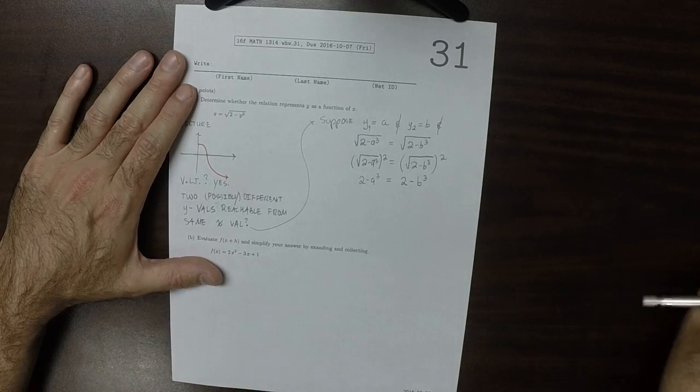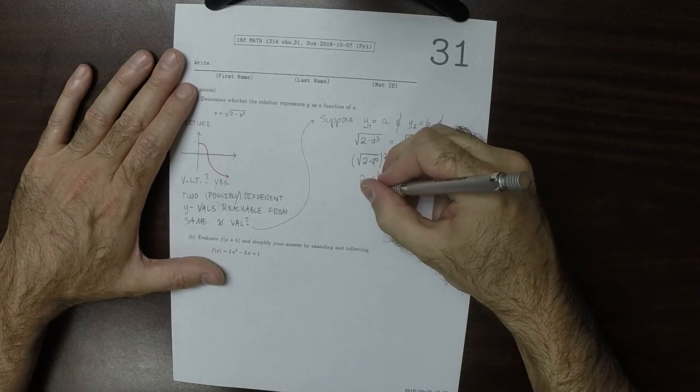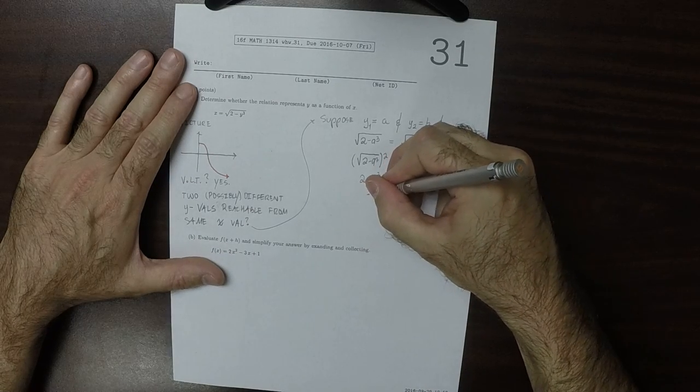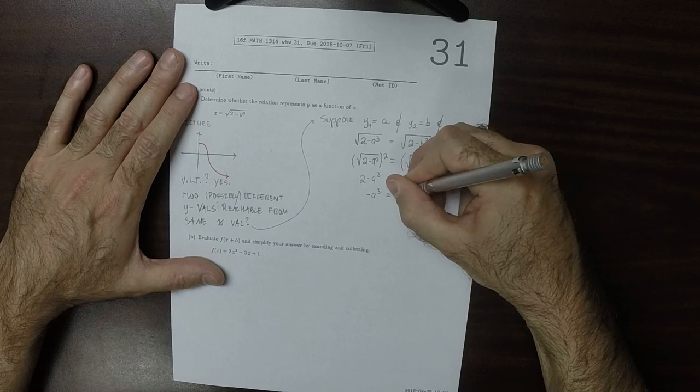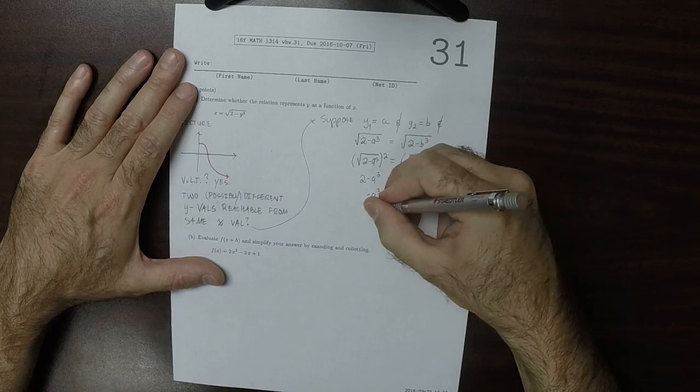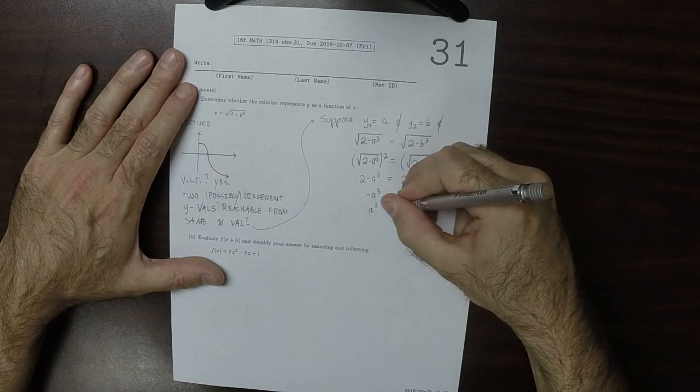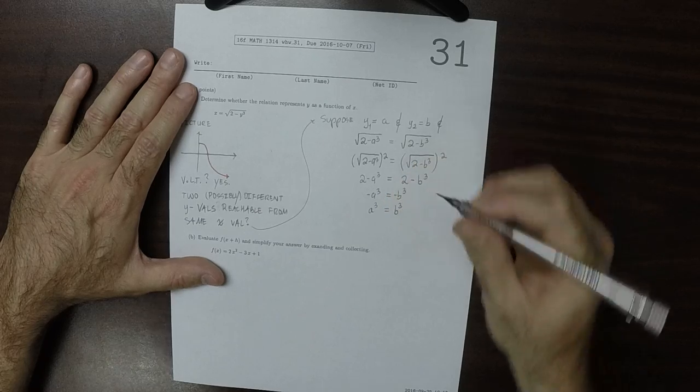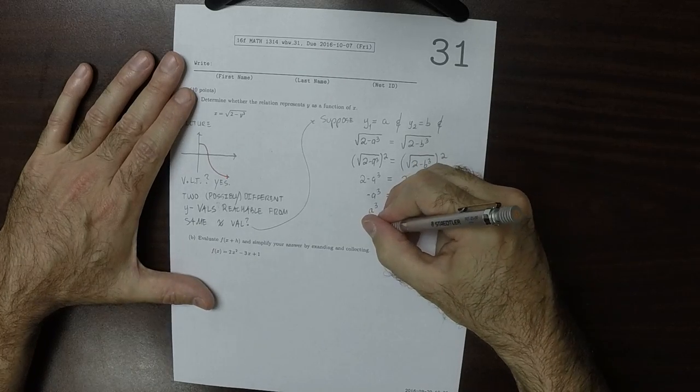Then we could subtract 2 from both sides to get negative a cubed is negative b cubed, and we can negate both sides to get a cubed is b cubed, and then cube root both sides to say that a is b.